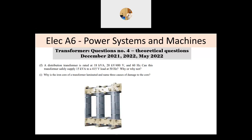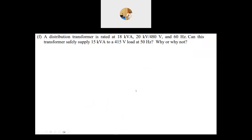Let's start with the first question. A distribution transformer is rated 18 kVA, with a voltage ratio of 20 kilovolt to 480 volt, operating at 60 Hz. The question is: can we use this transformer to supply 15 kVA instead of 18 kVA, but at 415 volt and 50 Hz? Why or why not?